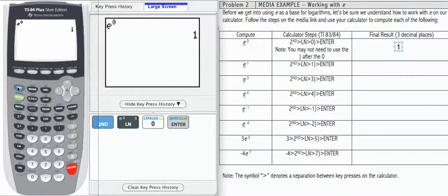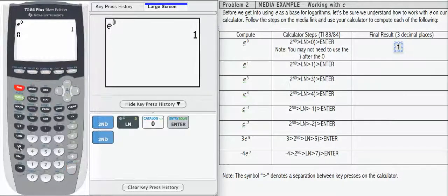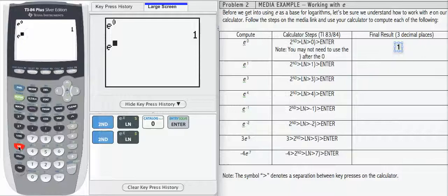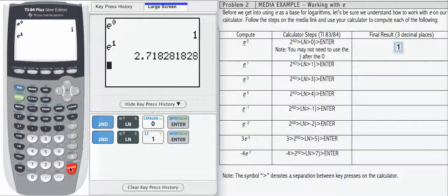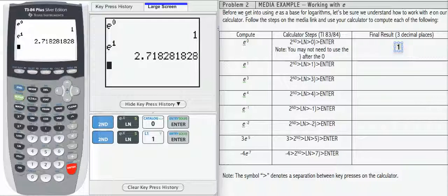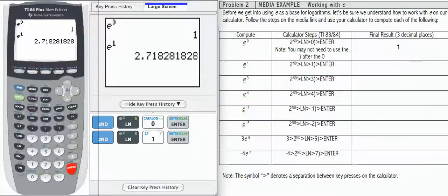Let's try e to the one, so second, ln, which gives me e to the one. And again, I don't need the parentheses on this calculator, I might on a different calculator. 2.71828, this is e, this is the number that was mentioned at the top of the page. If I round that to three decimals, I get 2.718.